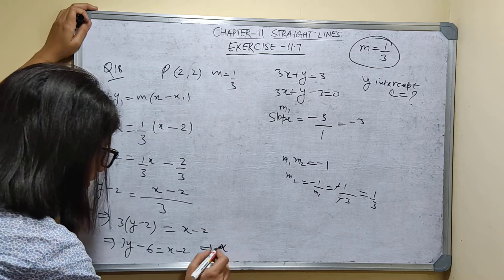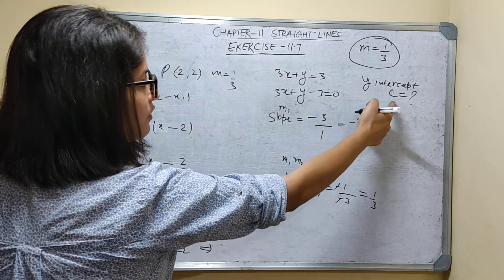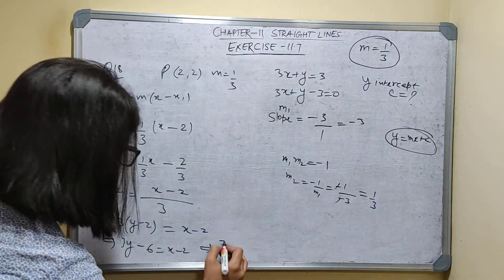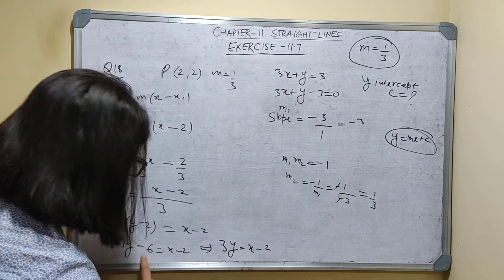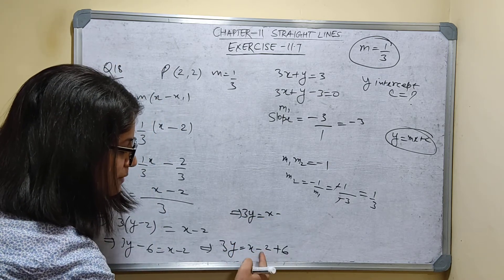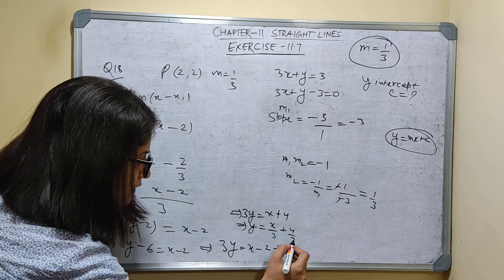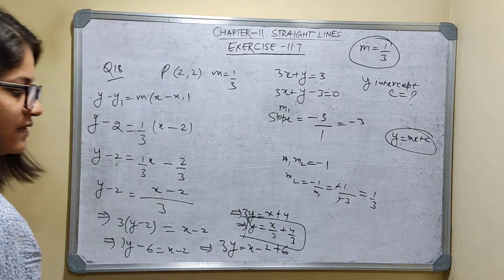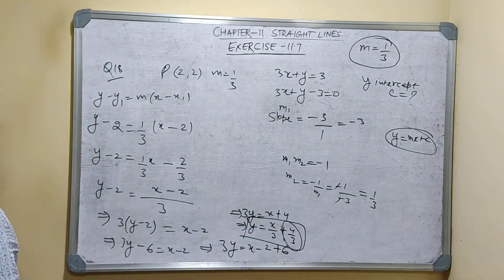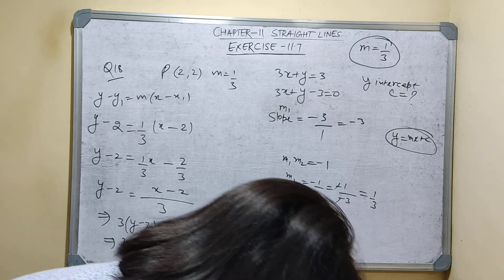Rearranging: 3y - 6 = x - 2. To find the y-intercept, I convert to y = Mx + C form. So 3y = x - 2 + 6, which gives 3y = x + 4, therefore y = x/3 + 4/3. This is the y = Mx + C form, where M = 1/3 and C = 4/3. So the y-intercept is 4/3. This is the answer.